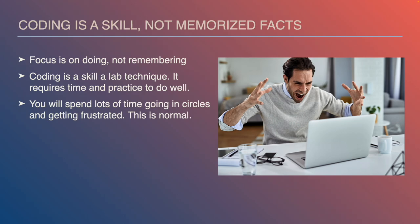Coding is a skill, not a set of memorized facts. You can't just read the textbook or watch videos and learn how to code — you actually have to do it. It's what we call in psychology and neuroscience a procedural skill, like riding a bicycle. The more you do it, the better you get. This course is designated as a lab course because you're actually doing things, not just memorizing. It requires time and practice. The reality of coding is you will spend lots of time going in circles, getting frustrated, getting errors — this is a normal part of the process. Take a calm, zen, problem-solving approach: you have an error, how do you fix it? Do web searches, try different things, break it, get errors until you get the right thing.